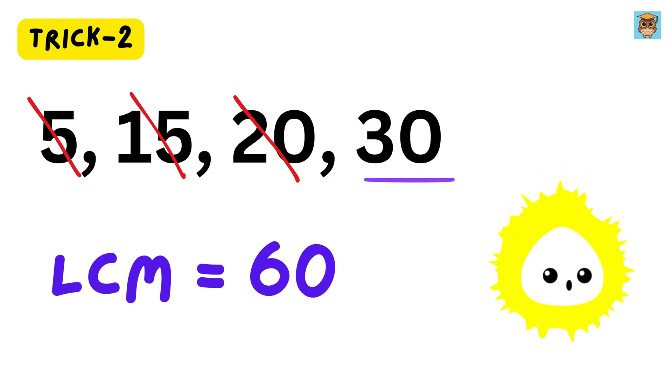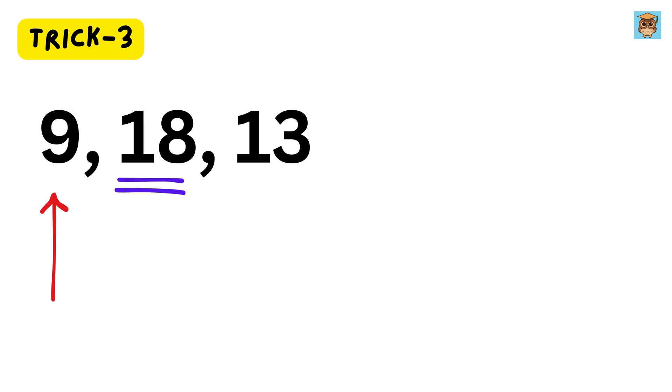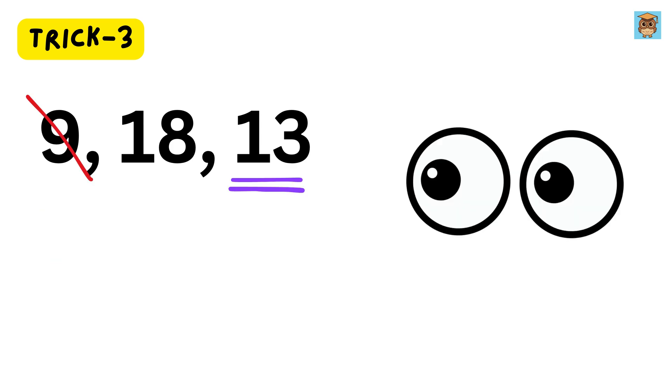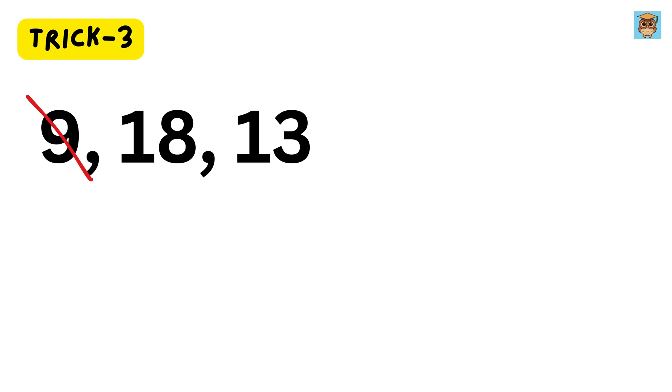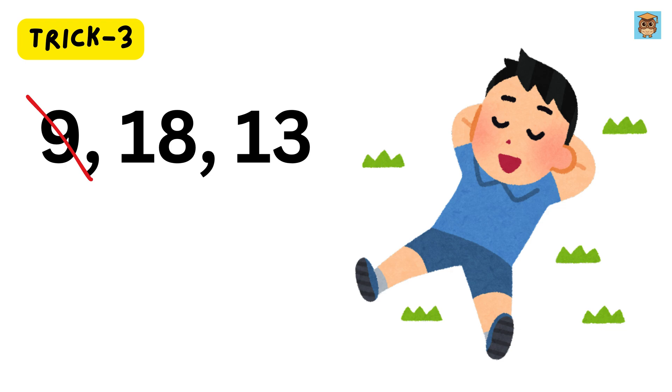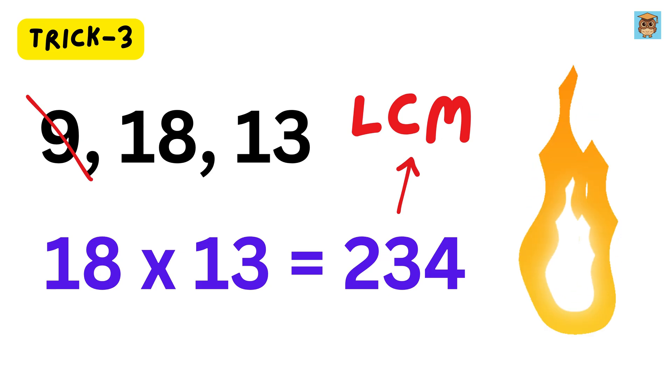That was too quick. Let us move on to trick number 3. Now, let us take numbers 9, 18, and 13. Bigger number is 18 here, which is divisible by 9, and therefore you now know that we will cancel this 9. Look here. 13 is a prime number. Prime numbers are those numbers that have only two factors, 1 and the number itself. So, wherever we get a prime number for LCM, first cancel as many numbers as possible, and then, without thinking anything else, just multiply it with the number left, because that will be the LCM. So, here we will do 18 times 13, which will be 234, and that's it. We are on fire.